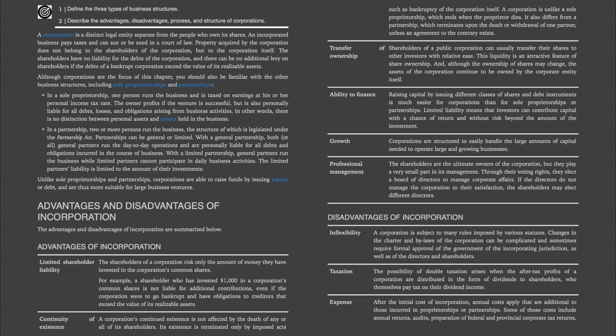In a sole proprietorship, one person runs the business and is taxed on earnings at his or her personal income tax rate. The owner profits if the venture is successful, but is also personally liable for all debts, losses and obligations arising from business activities. In other words, there is no distinction between personal assets and assets held in the business.